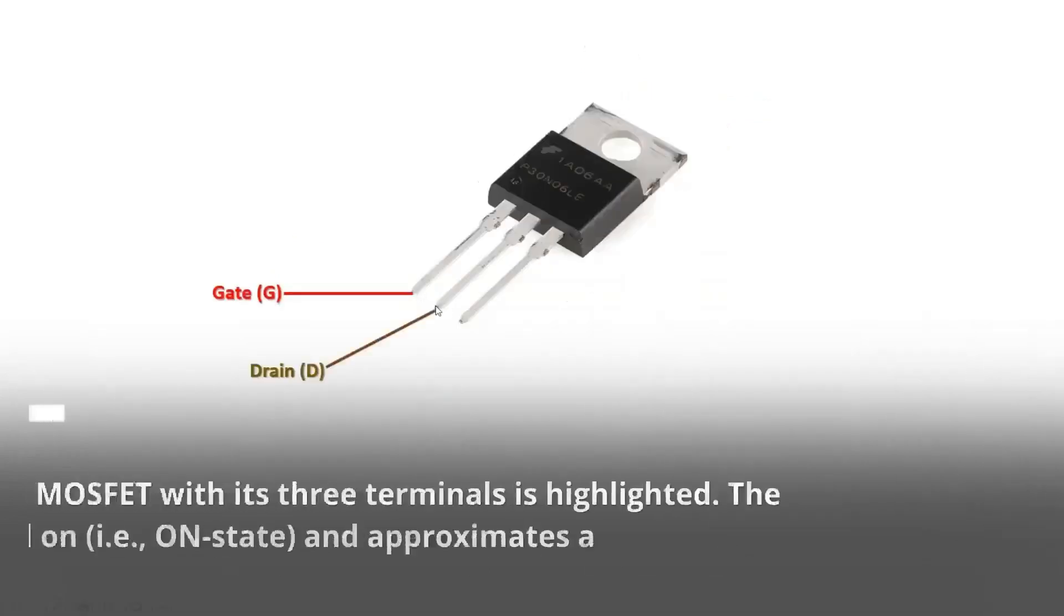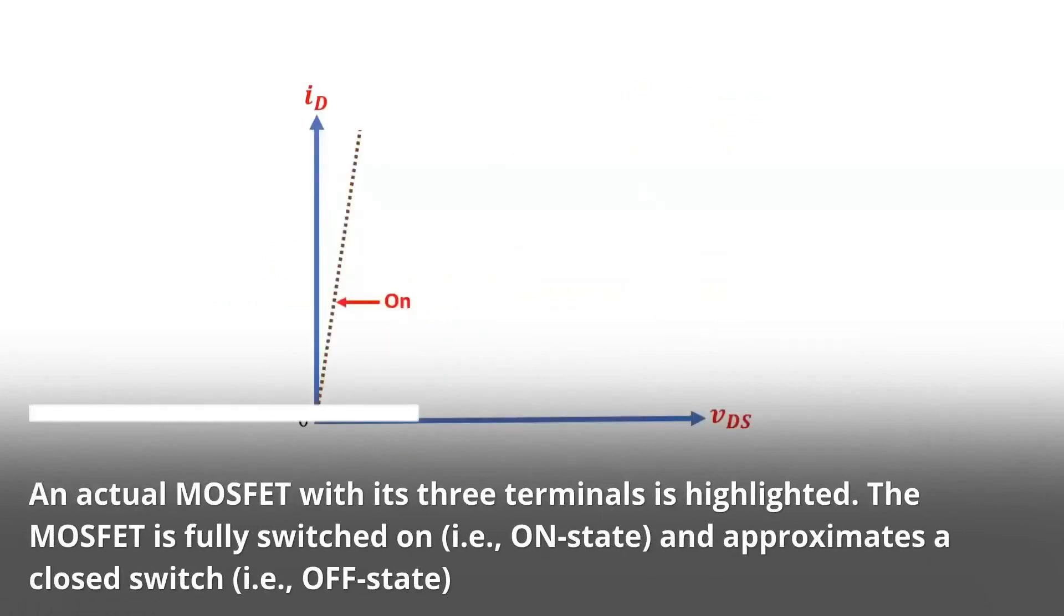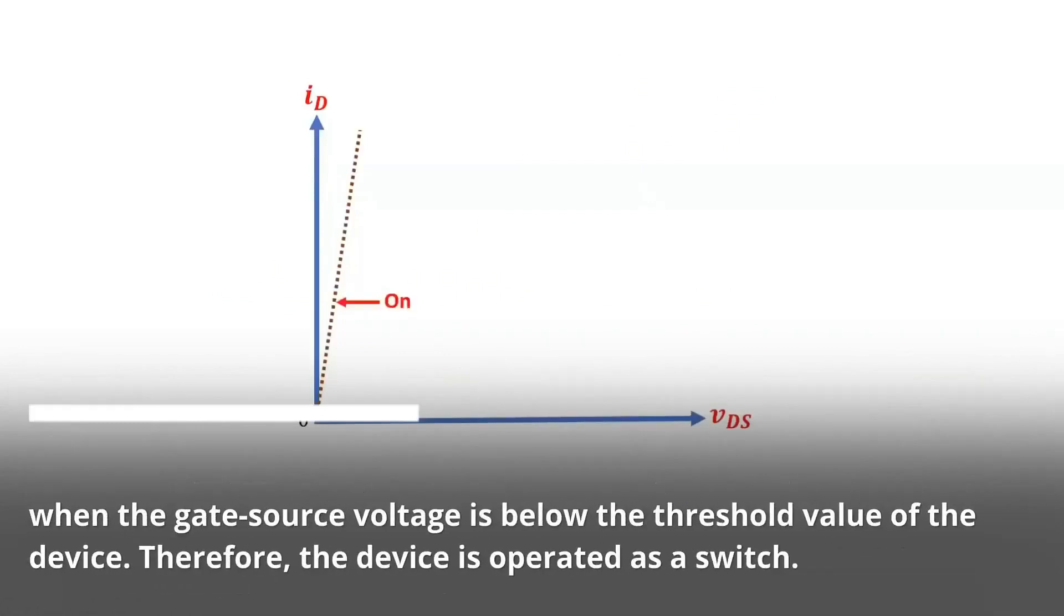An actual MOSFET with its three terminals is highlighted. The MOSFET is fully switched on, i.e., on-state, and approximates a closed switch. In OFF state, when the gate source voltage is below the threshold value of the device.